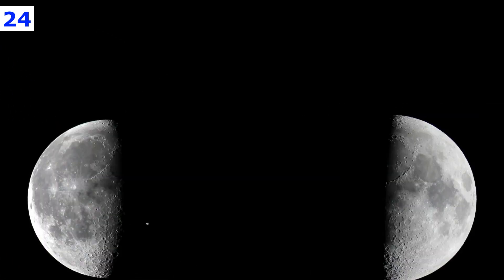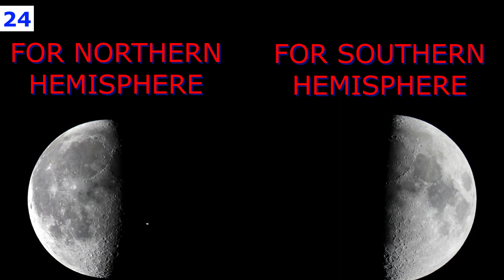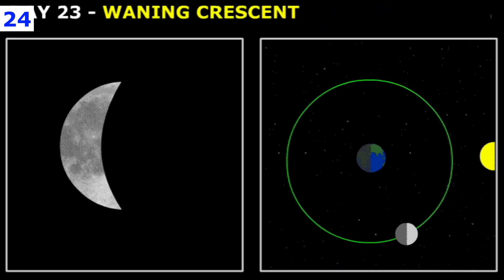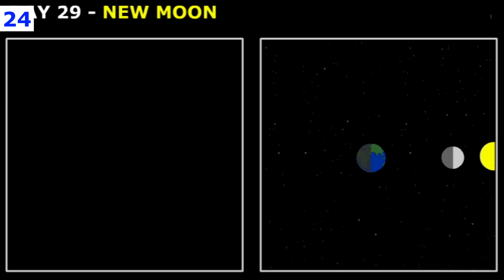You can tell the difference by which side of the moon is illuminated — the left side for the northern hemisphere. At this moment the moon is now three quarters of the way through its lunar cycle, hence the name third quarter. It is also sometimes called a last quarter moon, simply meaning that it's entering the last quarter of its cycle.